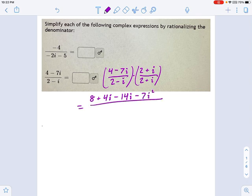Which we can simplify. We'll do that in a moment. And for this one, we get 2 times 2 is 4, and then plus 2i, and then minus 2i, and then minus i squared.